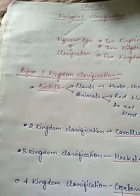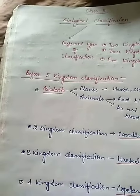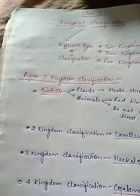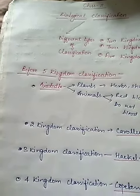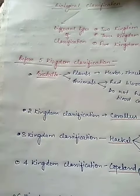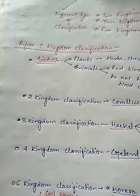Many scientists have given various kinds of classification systems based on their own ideas. Before going to start the five kingdom classification, we have to focus on what existed before it — that is, how many types of classification existed before the five kingdom classification.